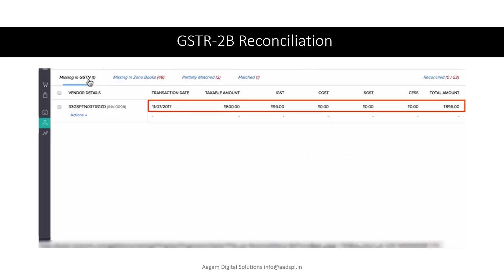Let's take a look at GST R2P Reconciliation in Zoho Books. First we have Missing in GST. Missing in GST means we have the data in our Zoho Books accounts but there is no data in the GST portal. So what we have to do is inform our supplier that they need to file the returns or correct the entry for us.